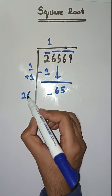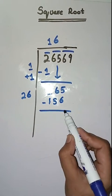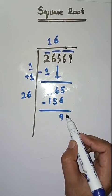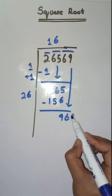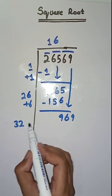And that's it. Next pair is 69. Isko niche le ayenge. Yaha pe hum karenge 26 plus 6 which is equal to 32. Now we will take a number 3. 323 times 3 is 969.